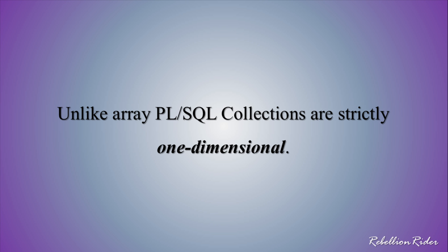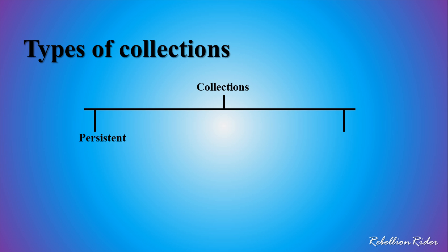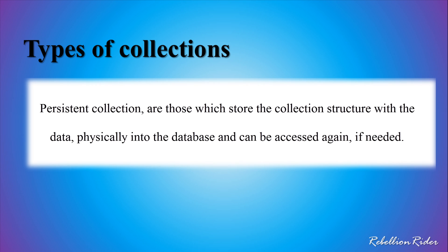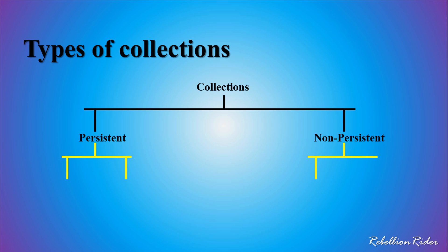But unlike arrays, PLSQL collections are strictly one dimensional. PLSQL collections can be divided into two categories: persistent and non-persistent. Persistent collections store the collection structure with the data physically into the database and can be accessed again if needed. Whereas non-persistent collections only store data and structure for one session. On the basis of these categories, collections are further divided into three types: nested tables, variable sized arrays or V arrays, and associative arrays.